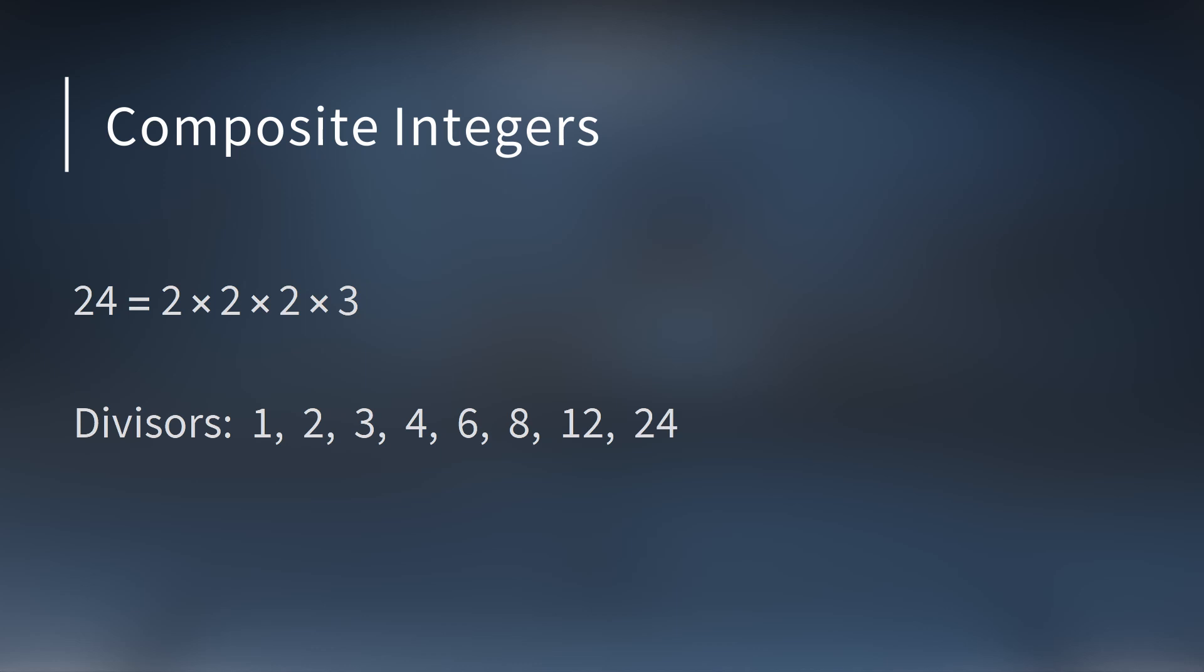So we have prime numbers like 13. Then you have numbers like 24. It's not prime. It can be factored as 2 times 2 times 2 times 3. Because it's not prime, we call it composite. Now, if you were to look at the numbers that divide 24, there's quite a few of them. There's 1, 2, 3, 4, 6, 8, 12, and 24. So it has eight divisors. A divisor is a number that divides another number evenly. Literally one-third of the integers from 1 to 24 divided evenly.